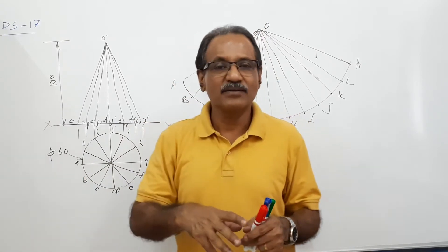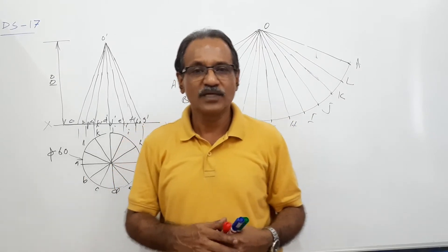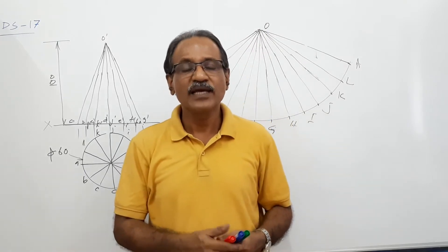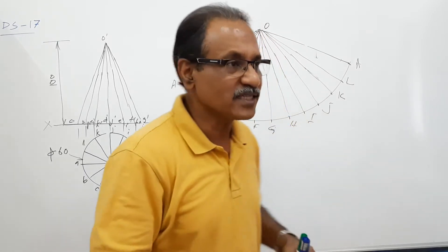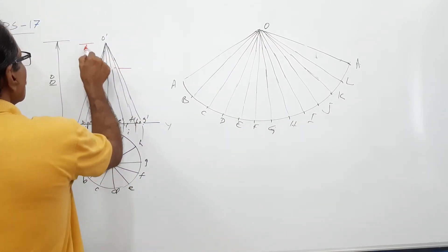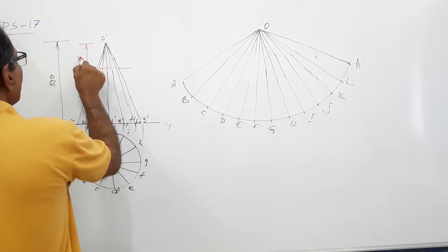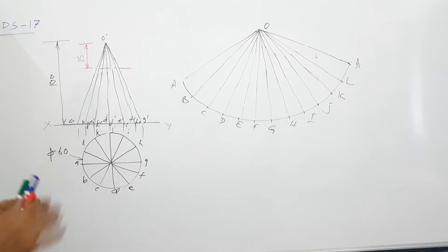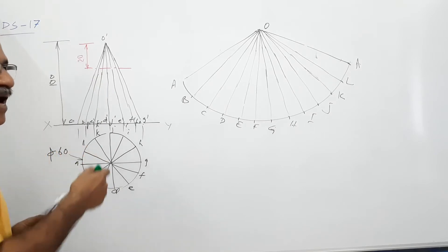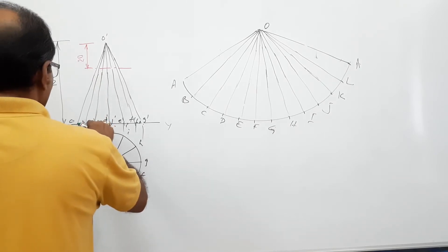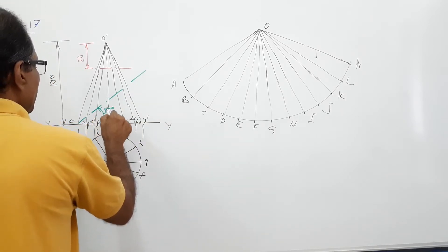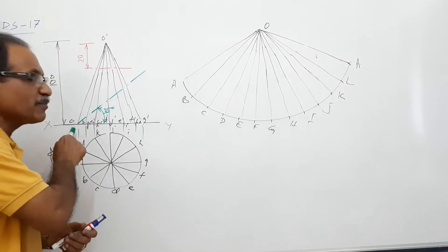A cone, 60 mm diameter, 100 mm tall, stands on its base on the ground. This is cut by two cutting planes. One is a horizontal cutting plane which passes through 20 mm below the apex. And an inclined cutting plane making 35 degrees to HP, passing through one of the extremities of the base of the cone.